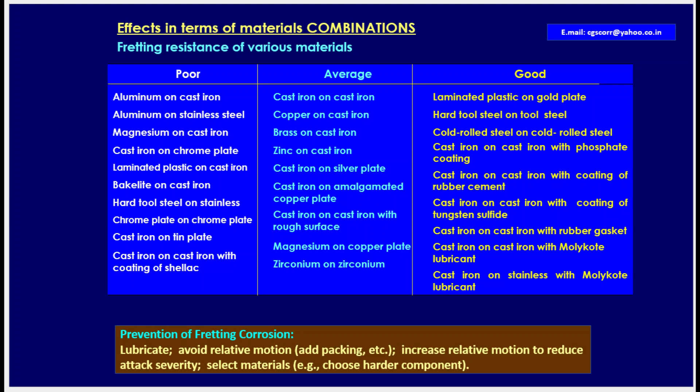In terms of material combinations, fretting resistance can be poor, average, or good. Materials with poor fretting resistance include: aluminum on cast iron, aluminum on stainless steel, magnesium on cast iron, cast iron on chrome plate, laminated plastic on cast iron, bakelite on cast iron, hard tool steel on stainless steel, chrome plate on chrome plate, cast iron on tin plate, and cast iron on cast iron with coatings of shellac.